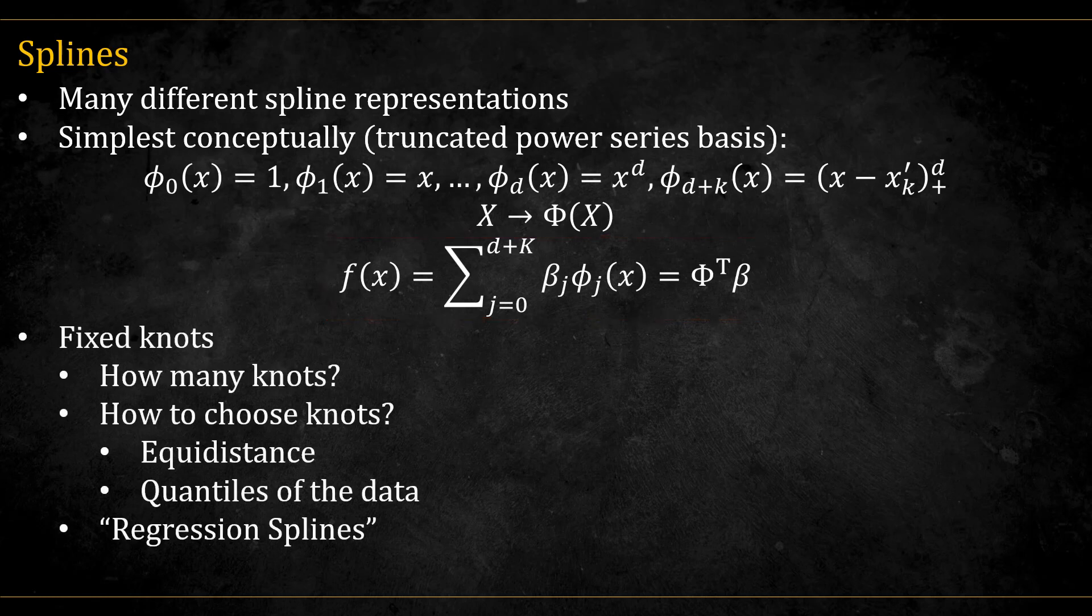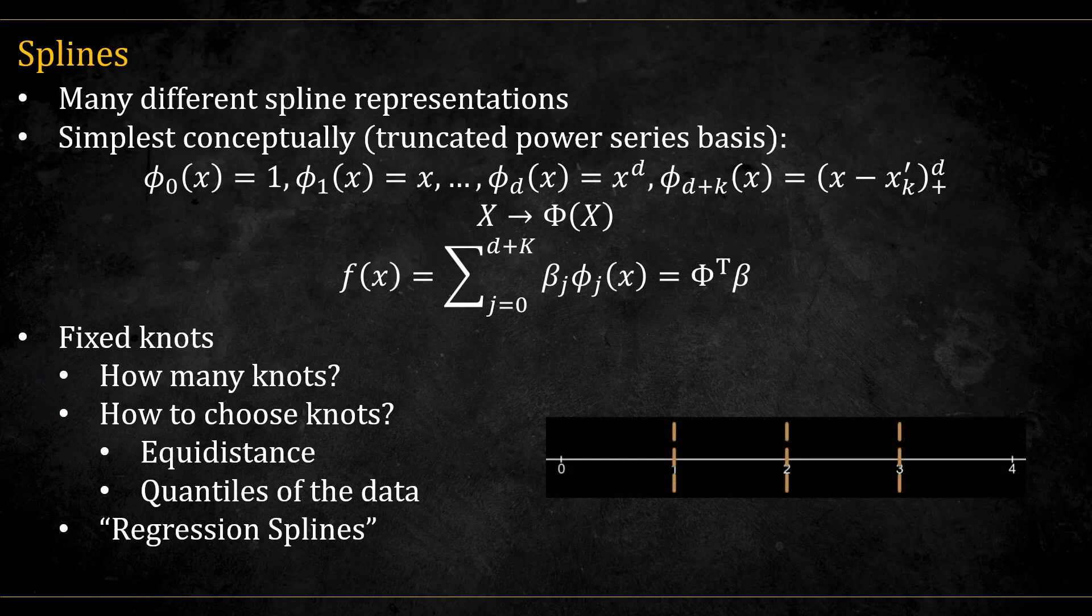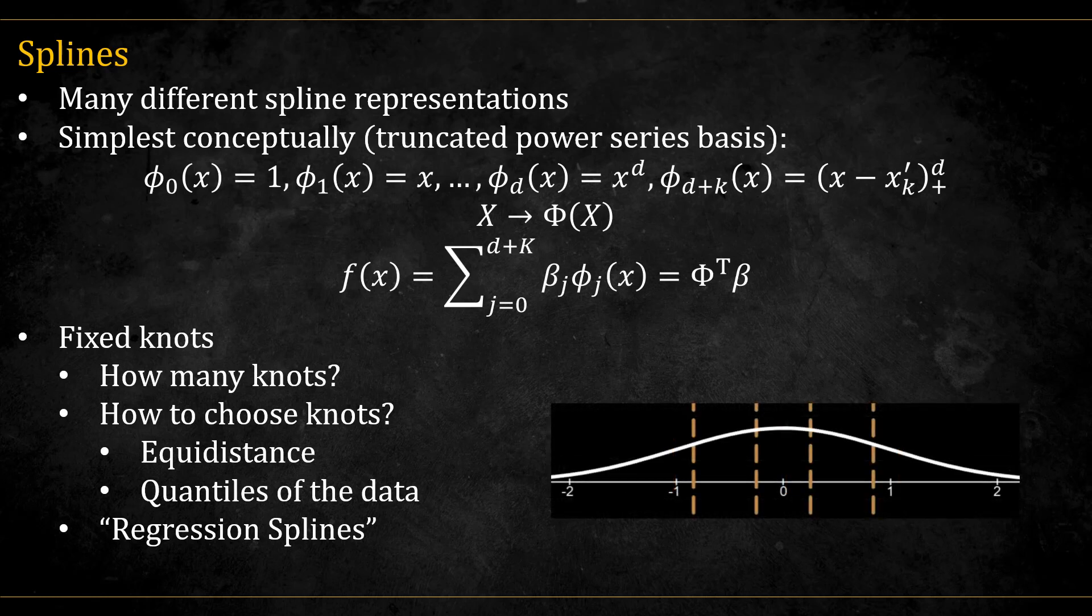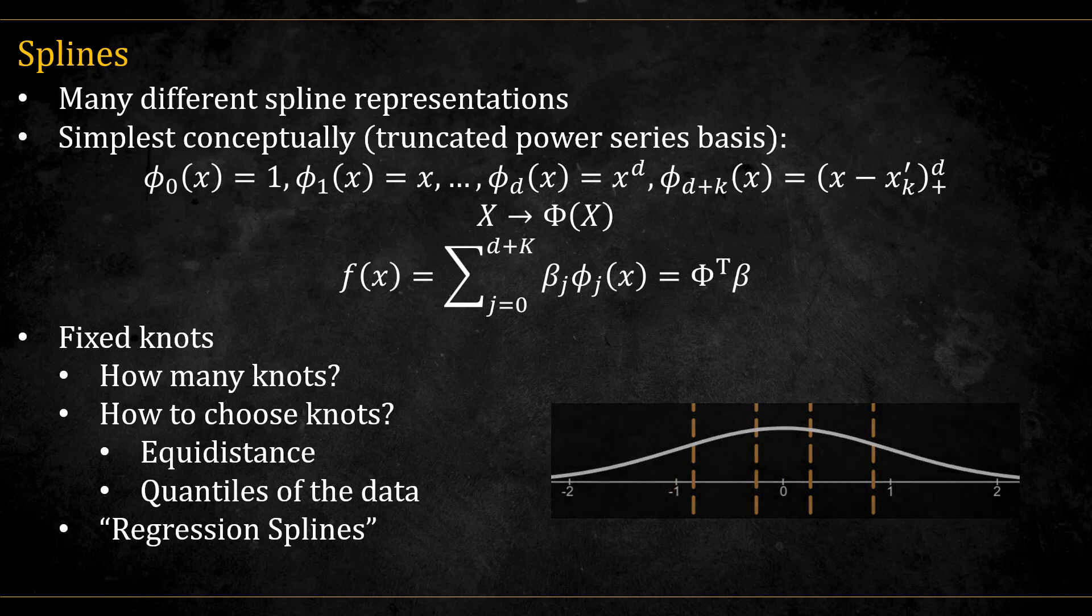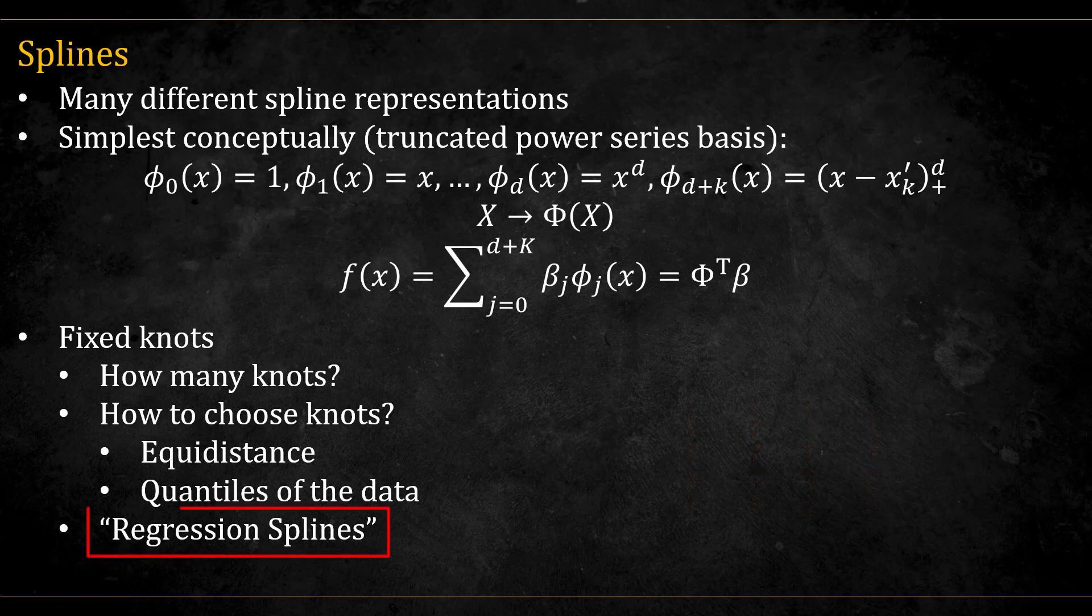Now how do we choose the knots? First, how many knots do we use? The more knots, the more flexibility the function has, but the higher risk of overfitting. We can compare different models with a different number of knots and choose the best one. Second, where do we place the knots? Two common options are equidistant, meaning equally spaced in the x-domain, like this, and quantile-spaced, meaning placed according to the quantiles of the data distribution. Say 20%, 40%, 60%, and 80%. When we choose the knots, this is often referred to as regression splines, as opposed to smoothing splines, which we will see in a bit. See you in part 2.